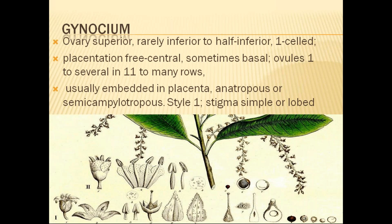Ovules are visually embedded into the placenta. They are anatropous, semi-campylotropous. The style is one and stigma is simple or lobed — a very simple stigma is present. The ovules — one to many — are embedded into the placenta, as seen in the right side bottom photograph showing the longitudinal section of the ovary.